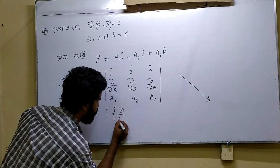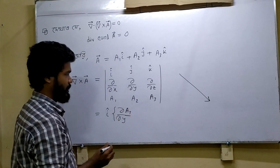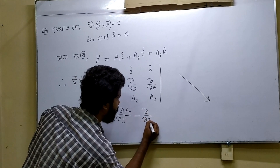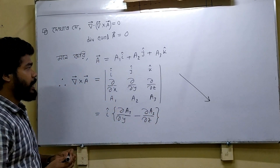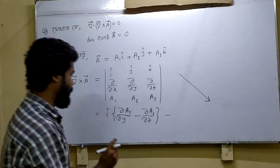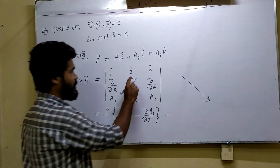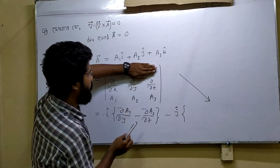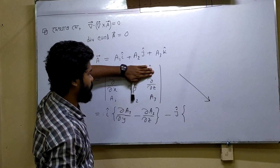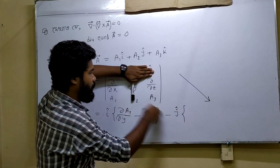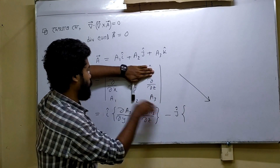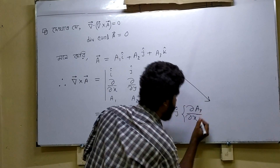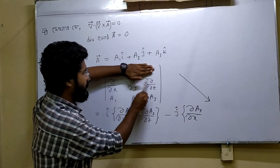So we have del y of a3, and we write the negative del z of a2, which gives the i-component. Then for the j-component, the first term is minus, and we write the del z of a1 minus del x of a3. For the k-component, it is plus. We write negative del y of a3 and del x of a3 for the appropriate terms.